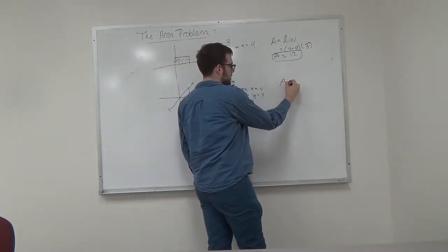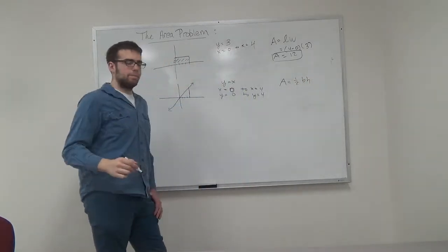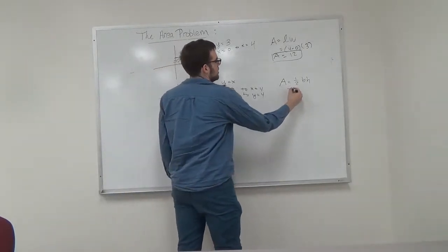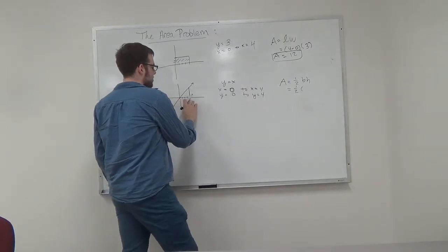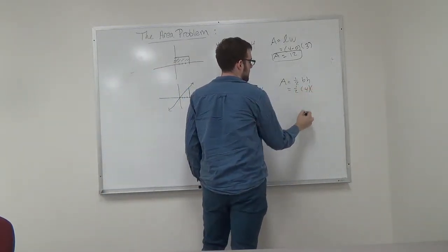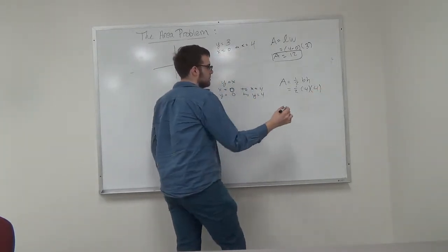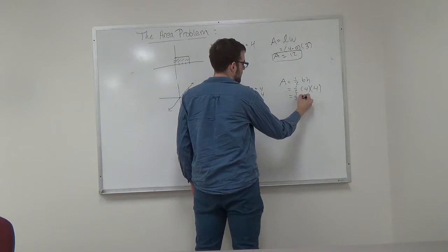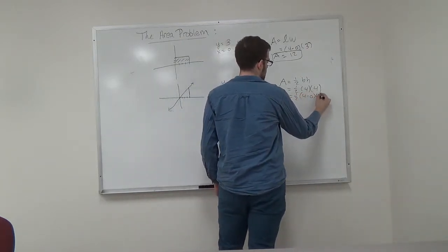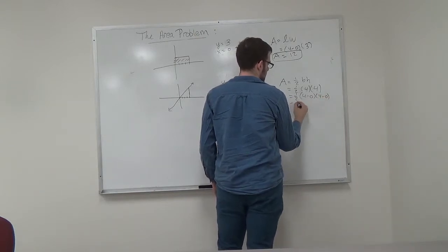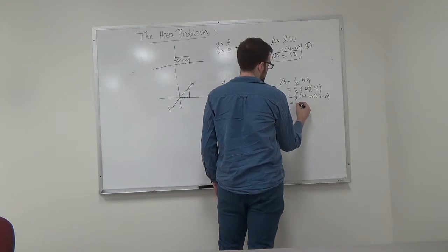And we remember that the area under a triangle is 1 half base times height. 1 half times the base, which is 1, 2, 3, 4. 1 half times height, which is 4. And we can also rewrite this as 1 half base, which is 4 minus 0 times height, which is 4 minus 0. And that gives us 1 half times 4 is 2 times 4 is 8.